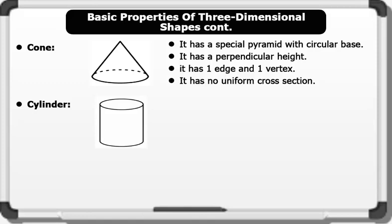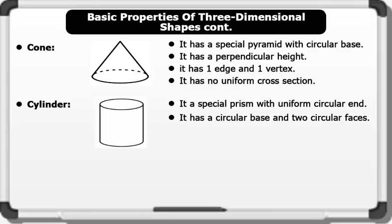The cylinder: properties of a cylinder include it is a special prism with uniform circular end, it has a circular base and two circular faces, and it has one curved face and no vertex.